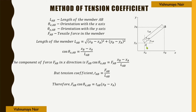The component of the force fab in the x direction will be equal to fab·cos(θx,ab), which is equal to fab·(xb−xa)/lab. Since the tension coefficient tab = fab/lab, the x component of force fab equals tab·(xb−xa).